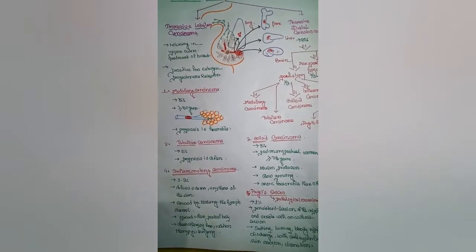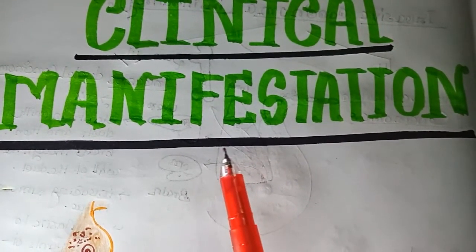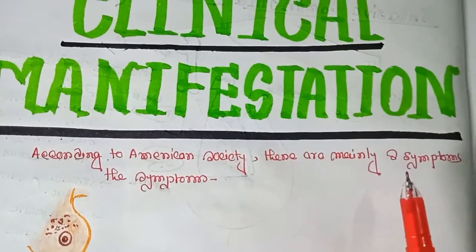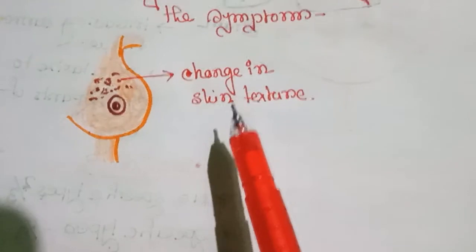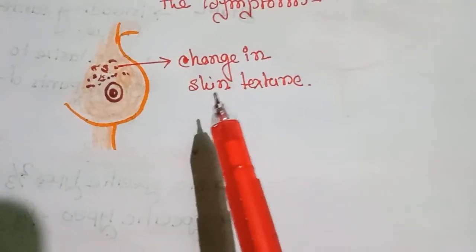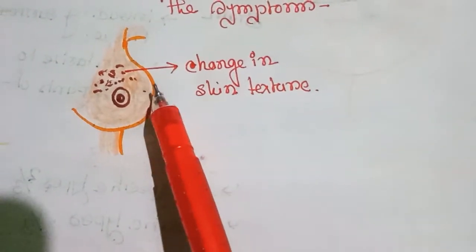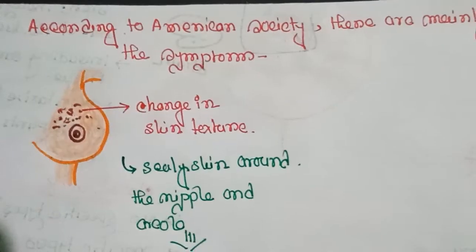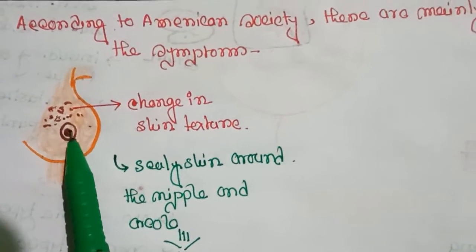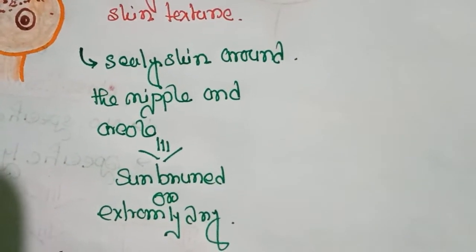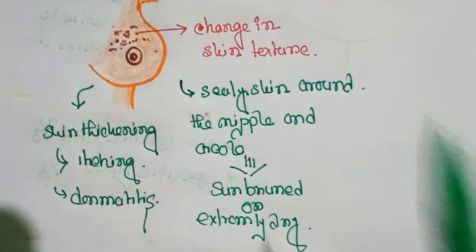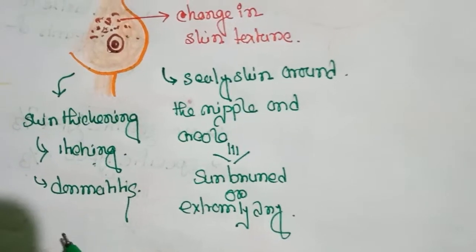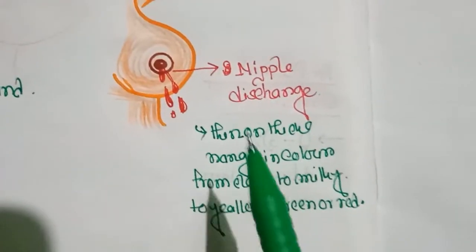Now I talk about the clinical manifestations of breast cancer. According to the American Cancer Society, there are mainly eight symptoms. The first is change in skin texture — breast cancer causes changes and inflammation in the skin cells that can lead to texture changes, including scaly skin around the nipple and areola, as though the skin is sunburned or extremely dry. Skin thickening may also be present in any part of the breast, which can lead to itching and dermatitis.